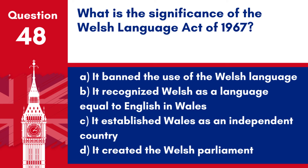Question 48. What is the significance of the Welsh Language Act of 1967? a. It banned the use of the Welsh language. b. It recognised Welsh as a language equal to English in Wales. c. It established Wales as an independent country. d. It created the Welsh Parliament.